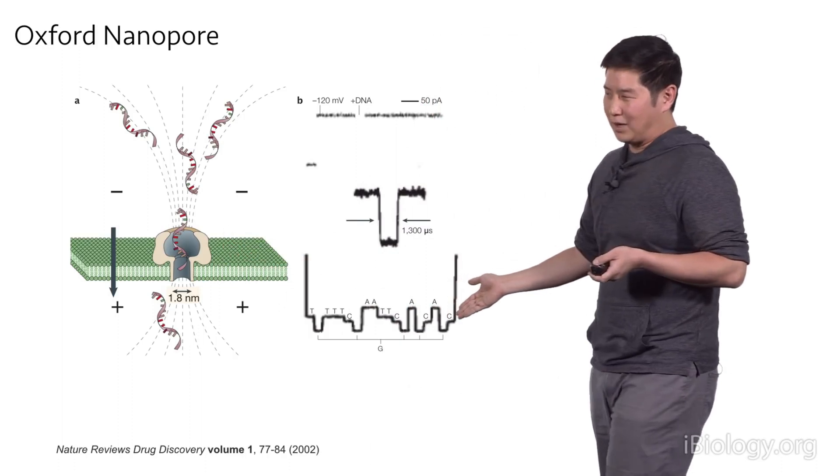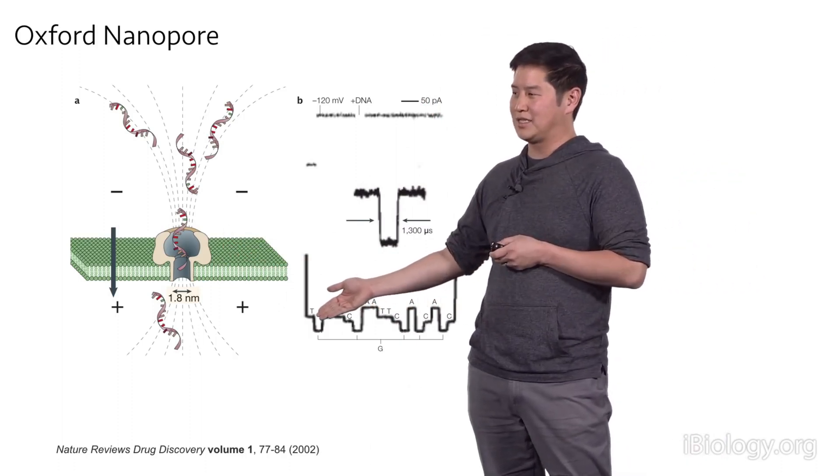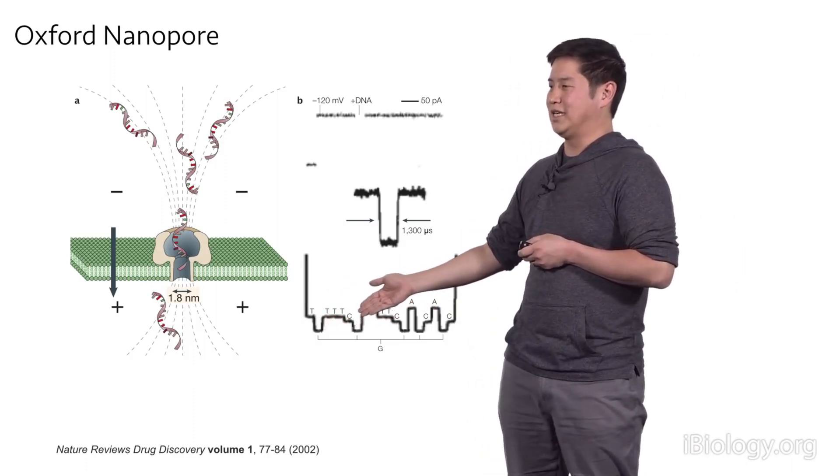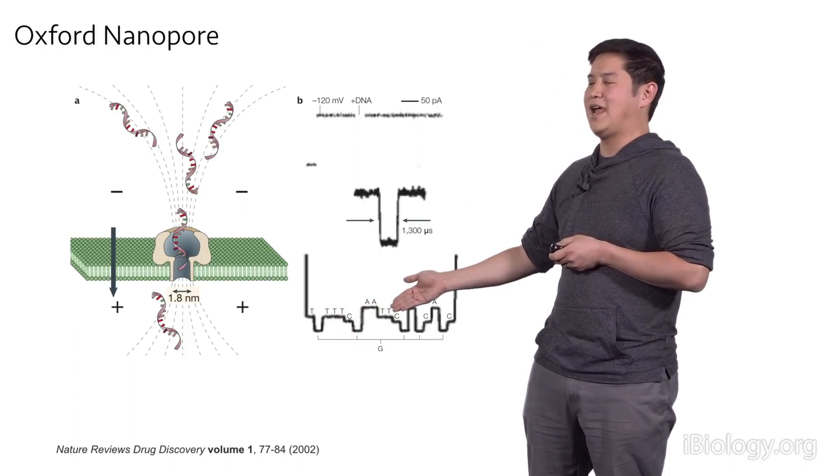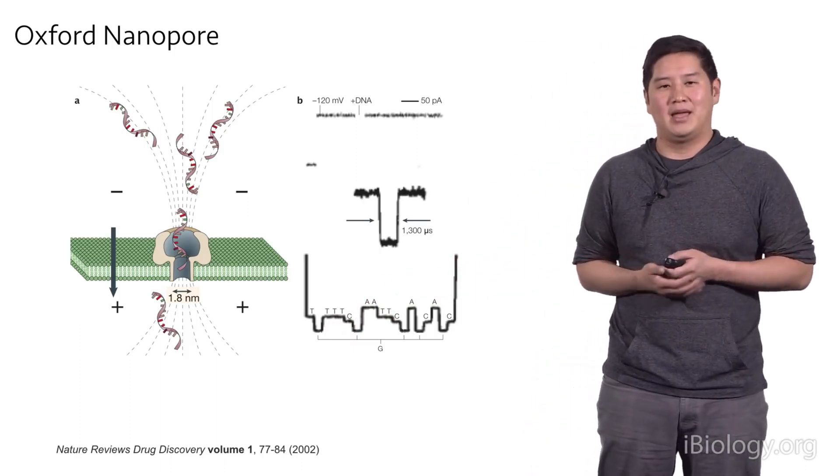And over here is just a depiction of what this looks like. So for instance, you might have a similar one level of current for your Ts, different ones for Gs, something else for Cs, and then another level of current for As. And you can just measure these current traces over time and build a sequence.